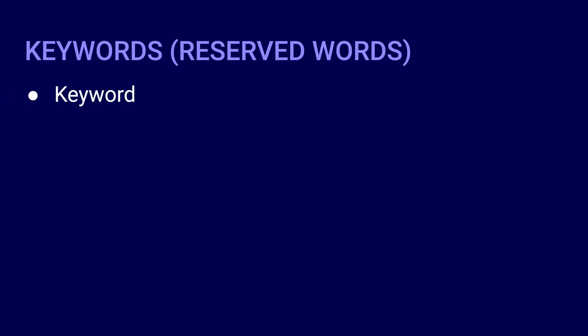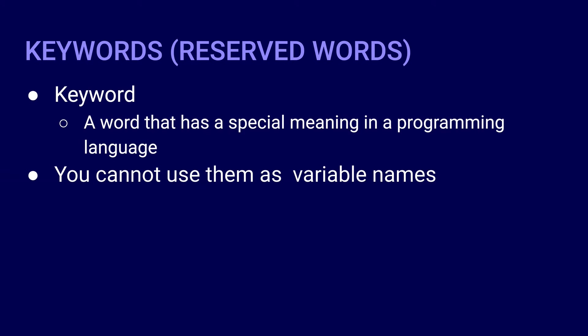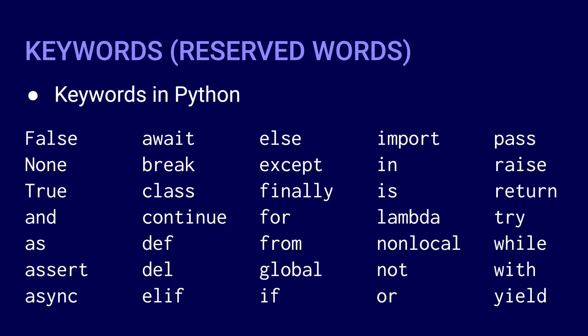Some words, however, cannot be used as variable names. Programming languages have things called reserved words or keywords. A keyword in programming is a word that has a special meaning in the language, so you cannot use them as variable names because the programming language already uses those names for something else. In Python, here is a list of the keywords used in the language. These keywords are also case sensitive. In future lessons, we are going to learn more about some of these keywords. For now, just remember that you cannot use these words as variable names.